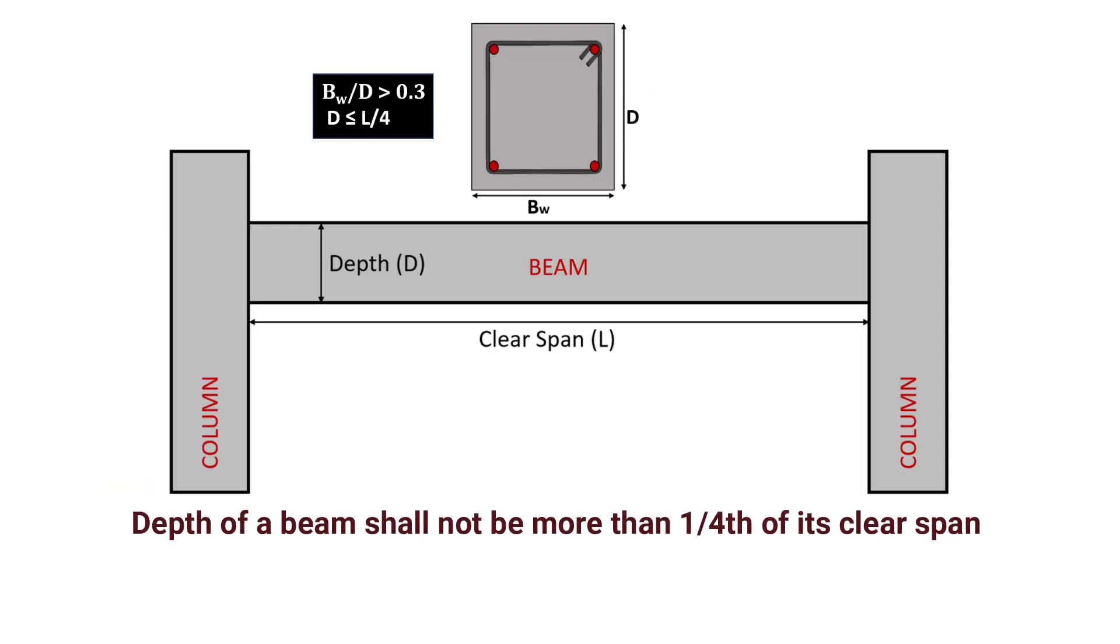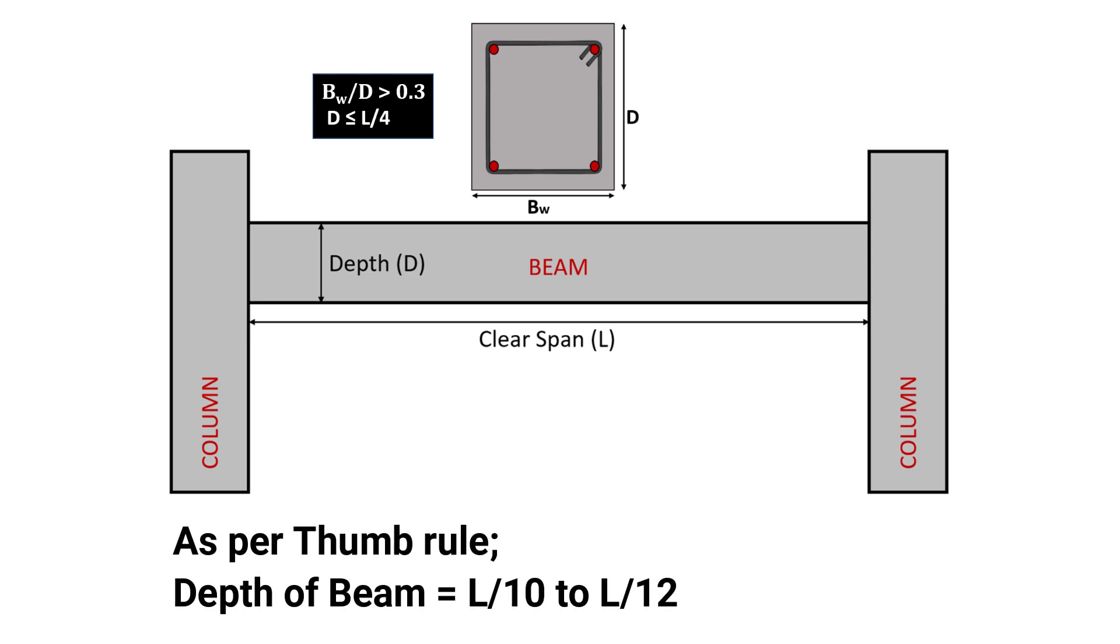The depth of a beam shall not be more than one-fourth of its clear span. That is, if D is the depth of a beam and L its clear span, then D shall be less than or equal to L by 4. However, for calculating the depth of a beam using thumb rule, we use the formula depth of beam equal to L upon 10 to L upon 12, where L is the clear span of the beam.